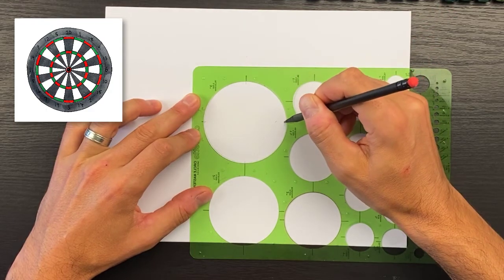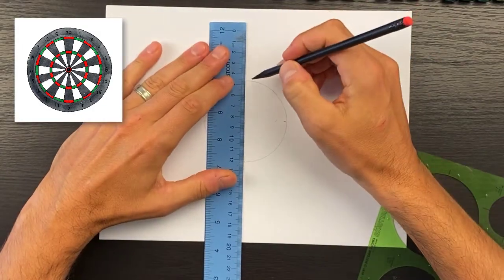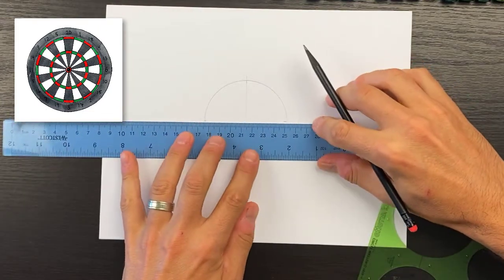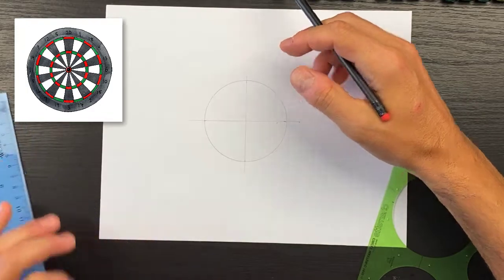The reason I'm doing that is I want to keep the rest of my circles centered, so I'll connect those points like this. This will help us out, so I want to draw a little bit larger dartboard.